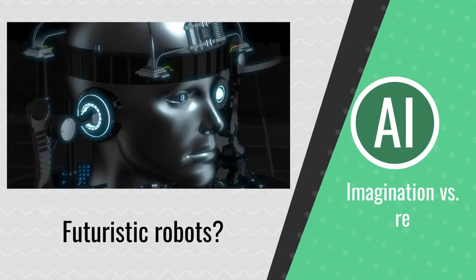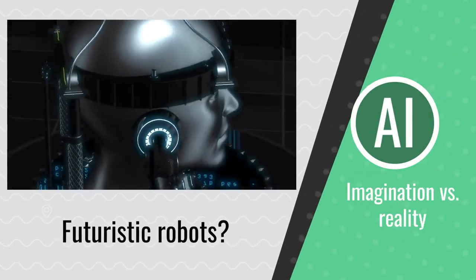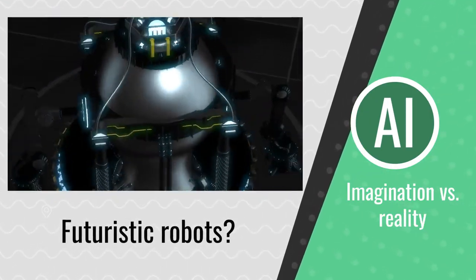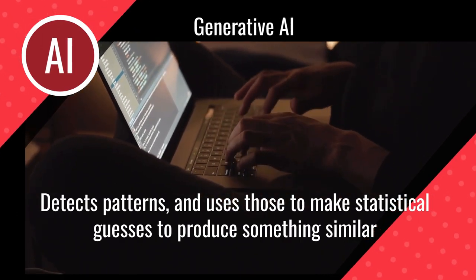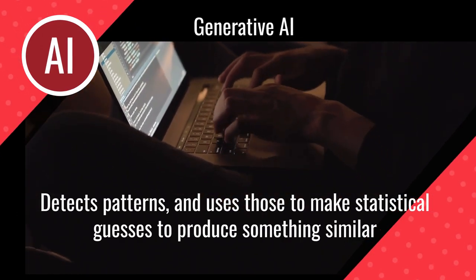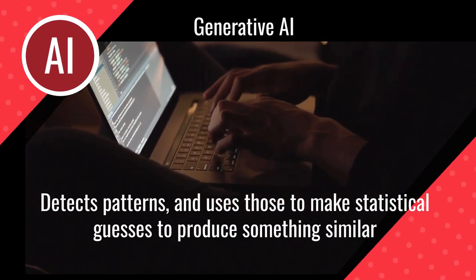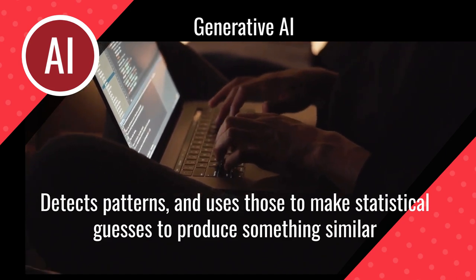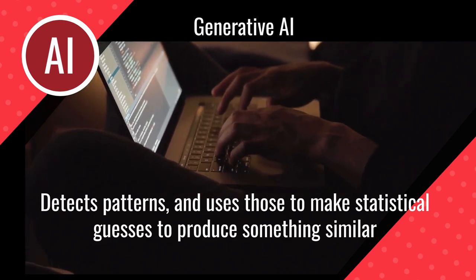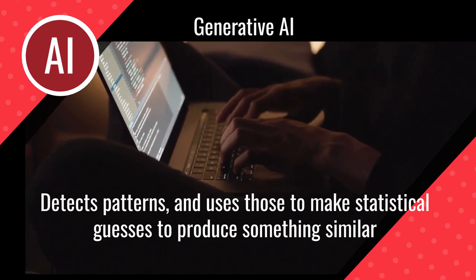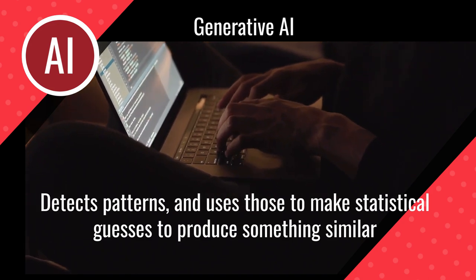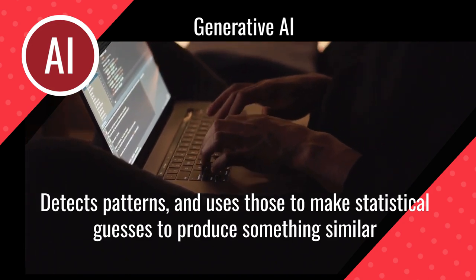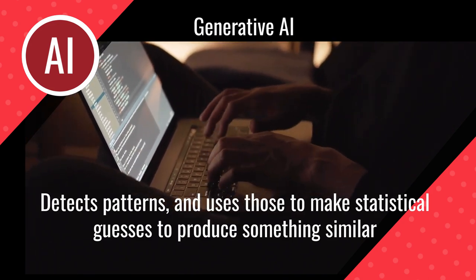Sometimes when we think of artificial intelligence, we imagine futuristic robots. Generative AI programmers can now feed a computer thousands of examples — from the letter A to the human face to works of art and literature — and ask it to detect patterns that it uses to make a statistical guess to produce something similar.